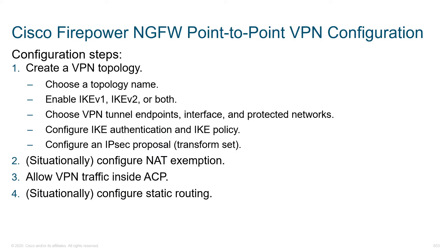The Cisco Firepower point-to-point VPN configuration is fairly similar to the ASA configuration. We need to do a lot of the same steps, just in an interface that looks slightly different. Concepts like network address translation, IKE version 1 versus IKE version 2, and making sure that intermediate devices allow IPSec traffic to go through are all still valid on the Firepower appliance.